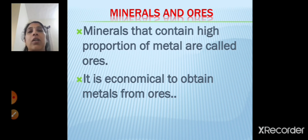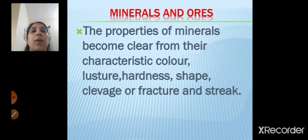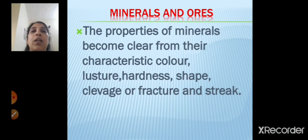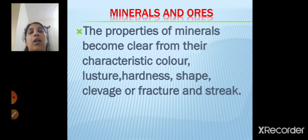We need not spend a lot of money for obtaining metals from the ores. The properties of the minerals become clear from their characteristic color, luster, hardness, shape, cleavage or fracture, and streak. So every mineral has got some properties. By seeing their color, by seeing the luster — that is the shininess — by seeing the hardness, by seeing the shape of the mineral or by seeing the cleavage or fracture — whether it has a split or separation — and streak, whether it has a thin line or mark.